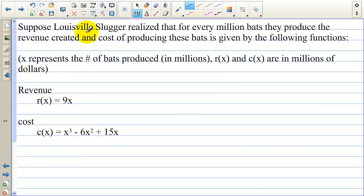Suppose Louisville Slugger realized that for every million bats they produce, the revenue created and cost of producing these bats is given by the following functions. x represents the number of bats produced in millions. R of x and C of x are in millions of dollars. So the revenue, the money we bring in, is represented by 9x, and the cost to produce the bats is x to the third minus 6x squared plus 15.